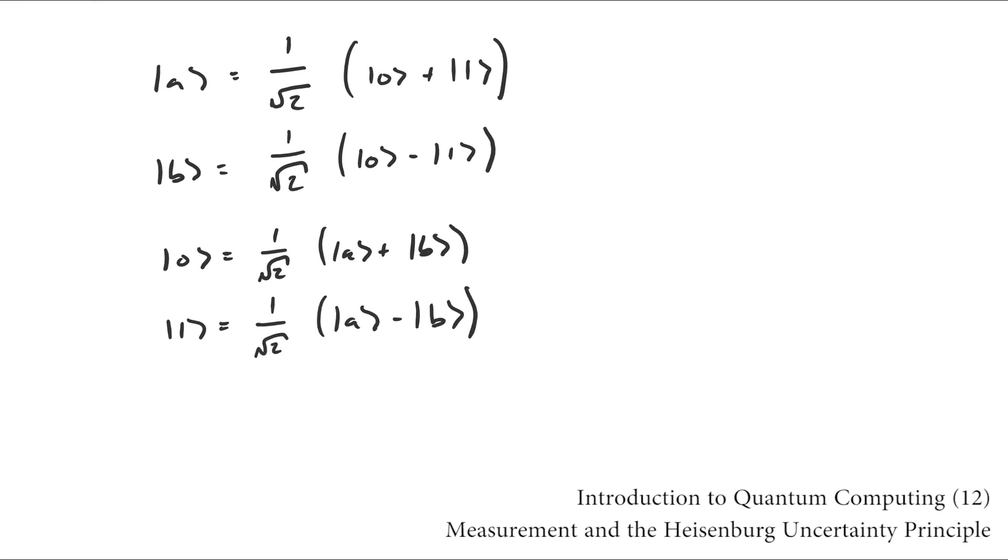So making a measurement of a particle's position collapses its state vector to a classical position state, which is a superposition of classical momentum states. Hence the popular phrase that a particle cannot simultaneously have both a well-defined position and momentum.